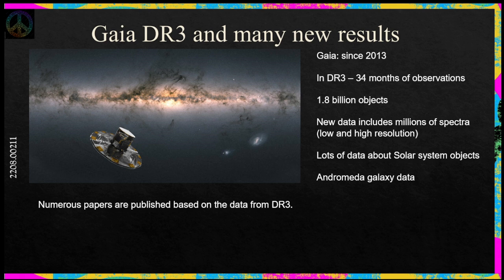Different teams and individual astronomers all over the world get ready for each new data release. Immediately when the data is in open access, people start running their codes and new results appear very rapidly. So it's not a miracle that in 2022 many new papers appeared using data from data release 2 as well. Let me describe four results published this year: three of them use DR3, and one uses an early release of DR3.